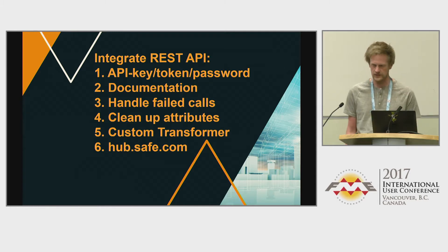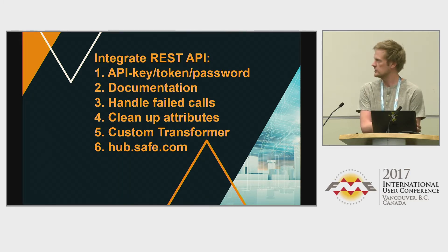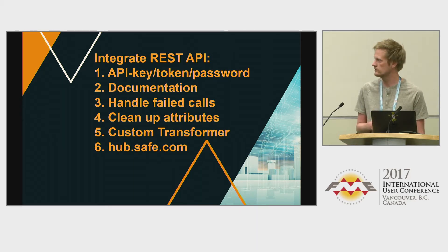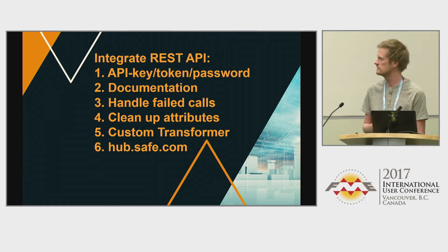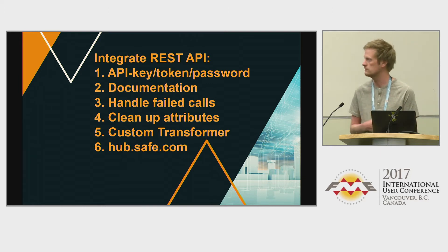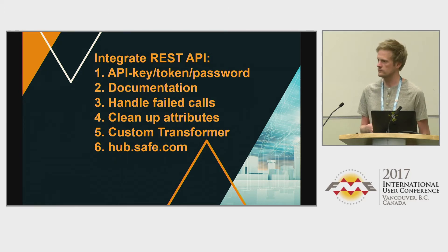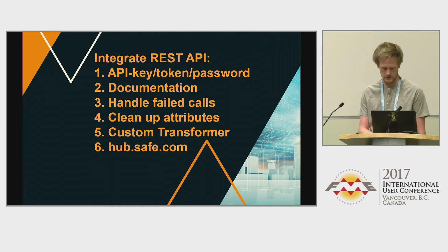There are five steps: you need to get a token, password, or access to the service; find the documentation for your service; handle failed calls because you will have character encoding issues and service failures; clean up your attributes so you don't have a lot of extra attributes going out; and wrap everything up in a custom transformer so you can reuse it easily.